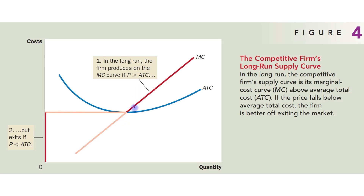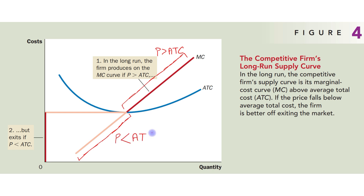This is shown in the figure. Looking at the portion of the marginal cost curve where price is greater than average total cost, the firm produces on the MC curve in the long run. In the other portion where price is less than ATC — for example at price levels P1, P2, or P3 — price is less than average total cost, so the firm is not able to cover average total cost and will exit the market.